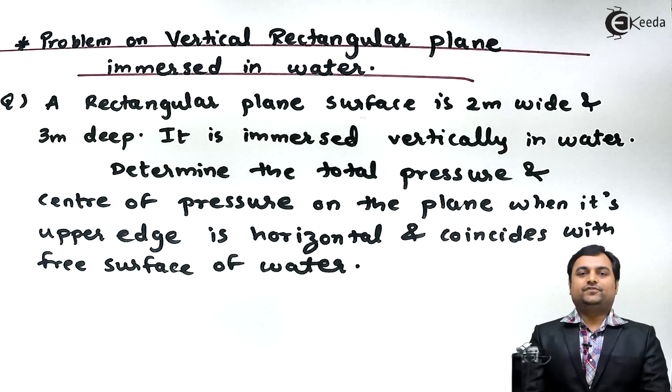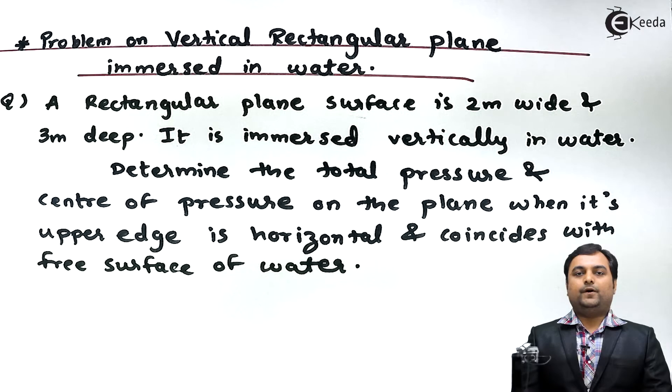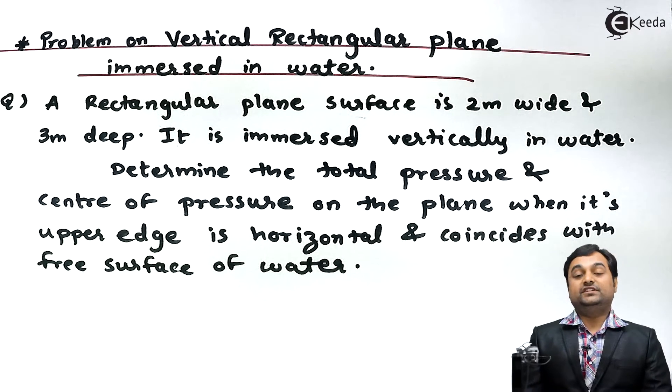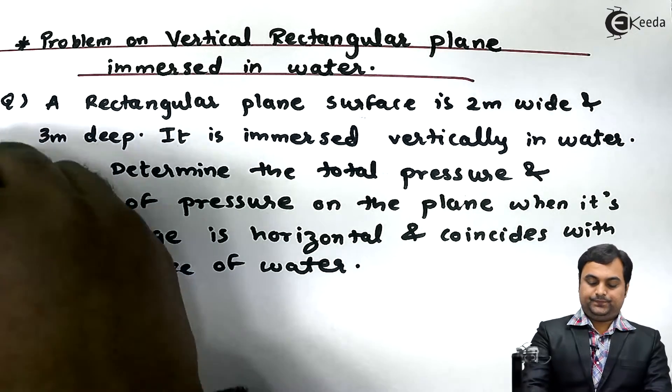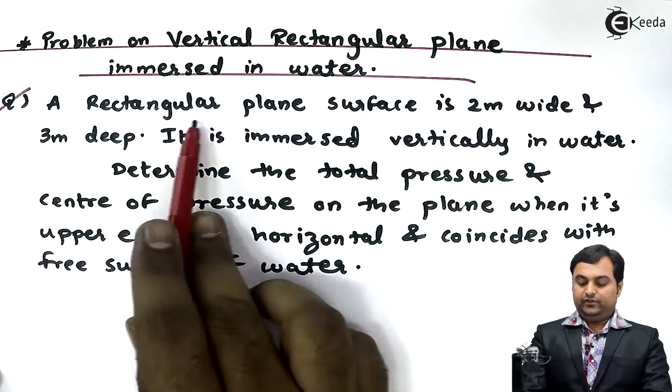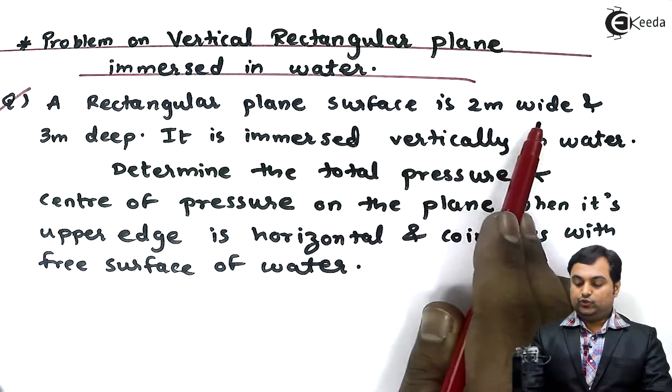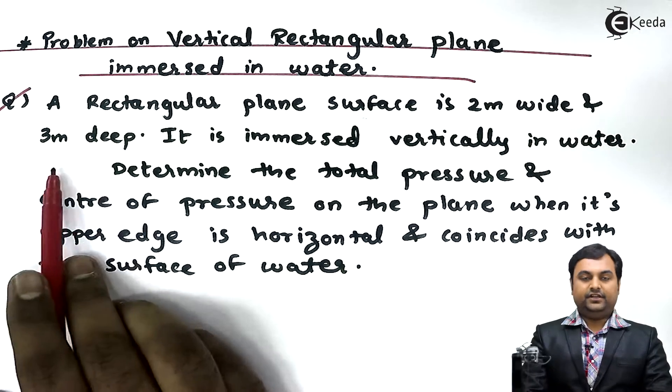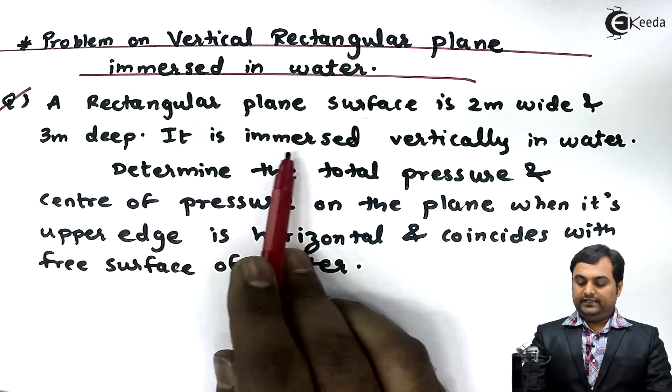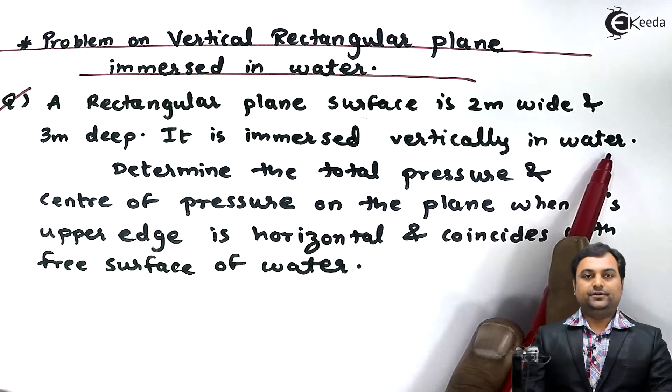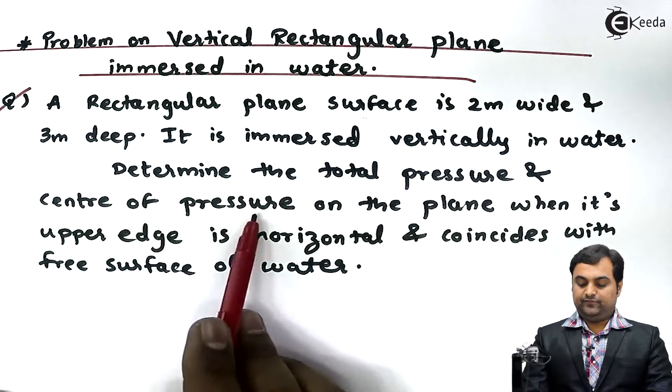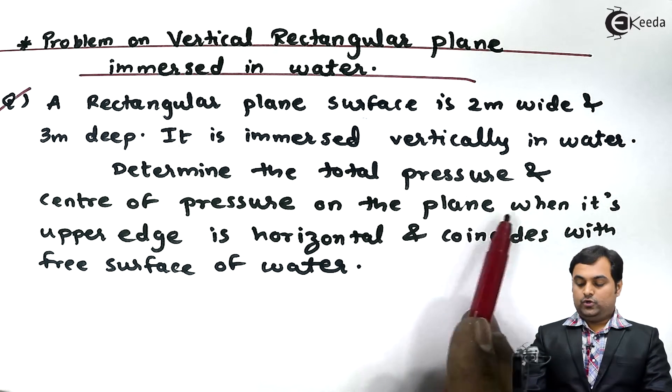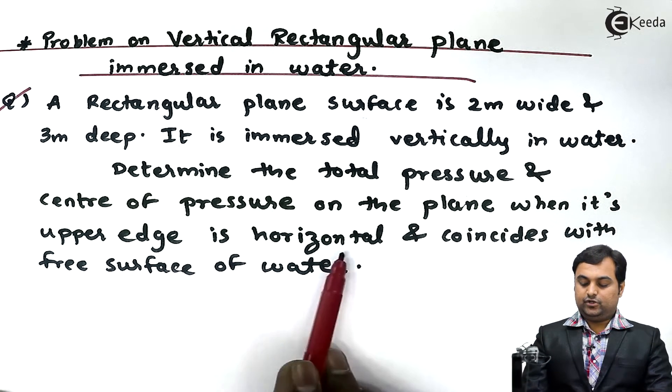Hello friends, here in this video we will take a problem of a vertical plane which is immersed in water. A rectangular plane surface is 2 meter wide and 3 meter deep. It is immersed vertically in water. Determine the total pressure and center of pressure on the plane when its upper edge is horizontal and coincides with the free surface of water.